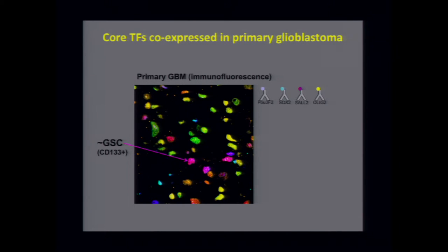We wanted to know the status of these core TFs in primary glioblastomas. We performed flow cytometry and immunofluorescence analyses, labeling antibodies that recognize each core factor and also using a CD133 antibody, and we stained slides of primary glioblastomas from patients. We see a great deal of heterogeneity, as you might expect — glioblastoma is a notoriously heterogeneous tumor. However, there clearly is a subpopulation of cells that coordinately express all four of the core TFs in the tumors.